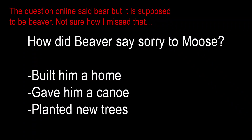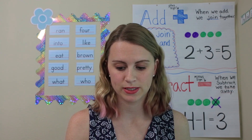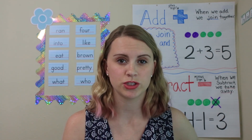Question number three: How did the beaver say sorry to the moose? Which of these three things did he do? Built him a home? Gave him a canoe? Or planted new trees? What did the beaver do to show the moose that he was sorry? He gave him a canoe. So number three is: gave him a canoe.